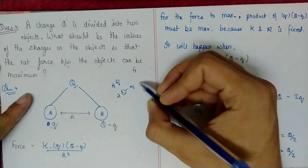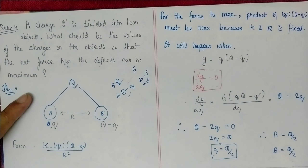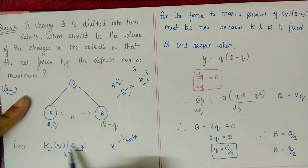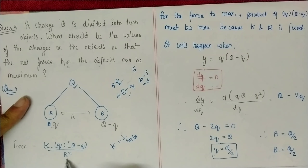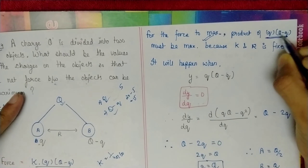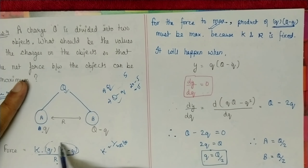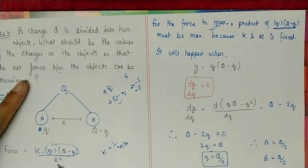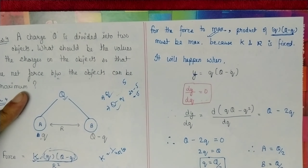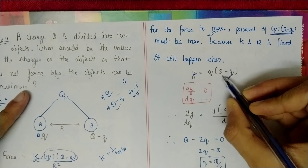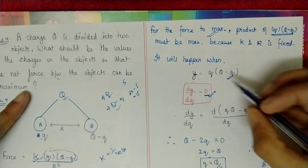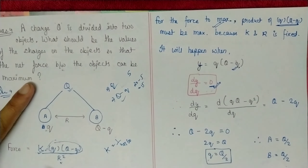To maximize the force, only the product q·(Q−q) can vary, since k and r are constants. Let y = q·(Q−q) = qQ − q². To find its maximum, differentiate y with respect to q and set equal to zero. Treating this as a variable term, the product must be maximized.